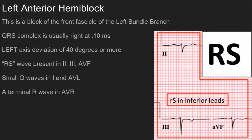The left axis deviation will usually be 40 degrees or more. That's pertinent because that's where a lot of people draw a fuzzy line between pathologic and physiologic left axis. You're going to have an RS wave present in leads II, III, and aVF. Because that's not a really commonly discussed waveform, I threw in a picture here. As you can see, there is no presence of the Q wave — you have an upsloping R wave, then you have a deep S wave followed behind it. So it's just an RS complex, not a full QRS complex.